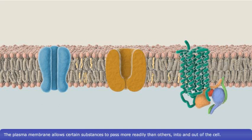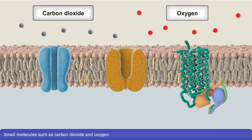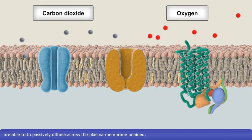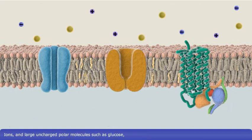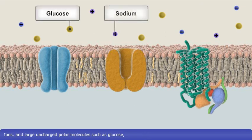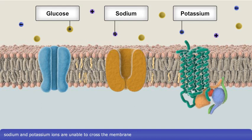The plasma membrane allows certain substances to pass more readily than others into and out of the cell. Small molecules, such as carbon dioxide and oxygen, are able to passively diffuse across the plasma membrane unaided because they have no charge. Ions and large uncharged polar molecules, such as glucose, sodium and potassium ions, are unable to cross the membrane as they have a charge or are too large.